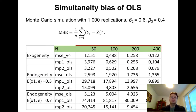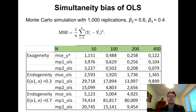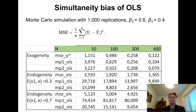We varied the sample size — the rows in green indicate sample sizes of 50, 100, 200, and 400 observations. In the first part of the table, labeled 'exogeneity,' we measure the mean squared error in estimating the output value, where MP refers to marginal products of our inputs. This first case is the benchmark scenario: what happens for the OLS estimator when there is no endogeneity. Of course, even in the ideal case there are some estimation errors.